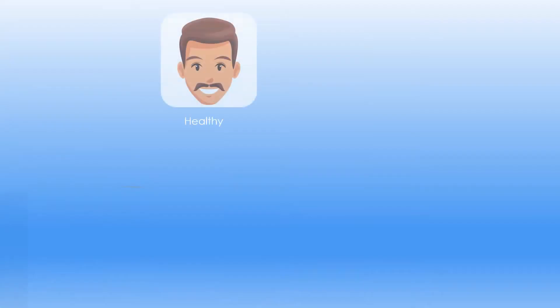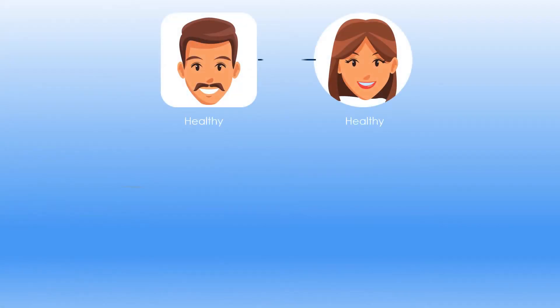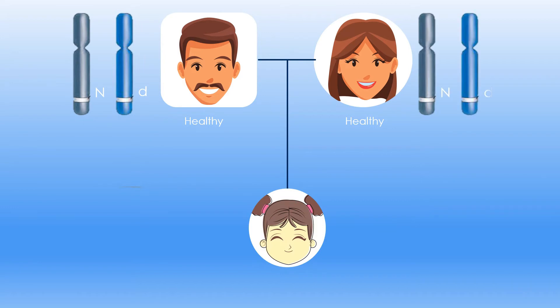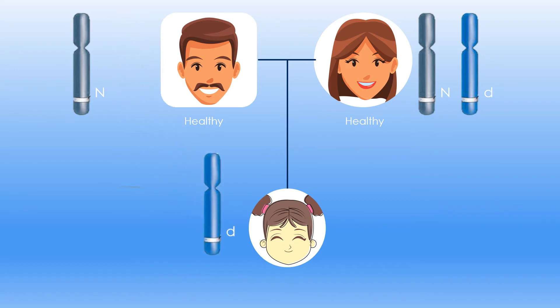The allele of the disease is recessive, since the healthy parents Sammy and Somare have an affected daughter, Saha. This means that at least one of the parents carries the allele of the disease in a masked state.